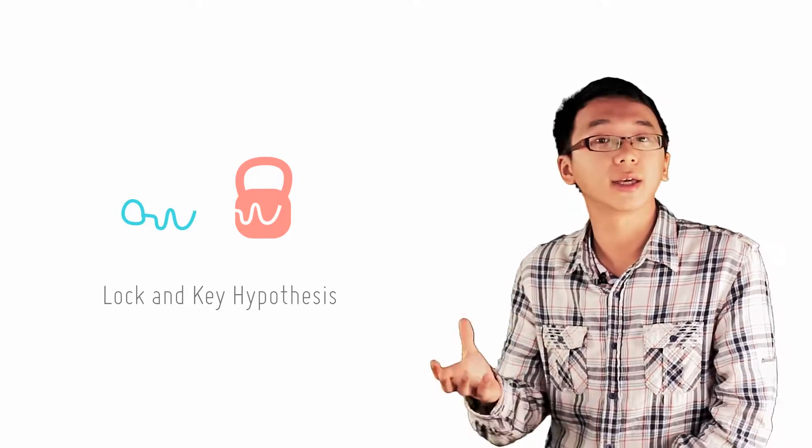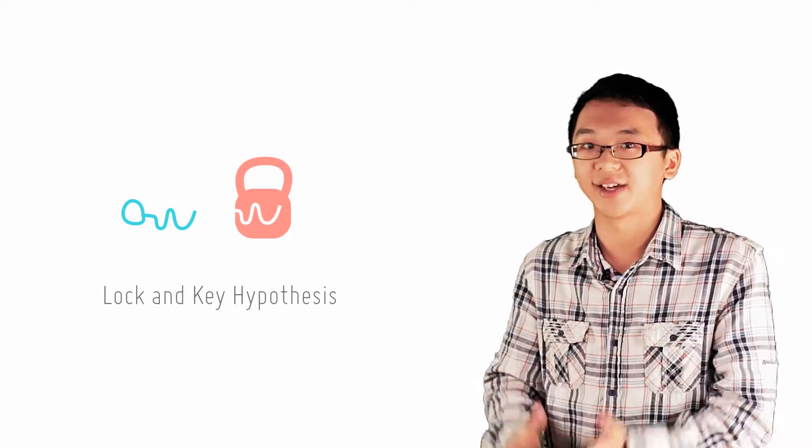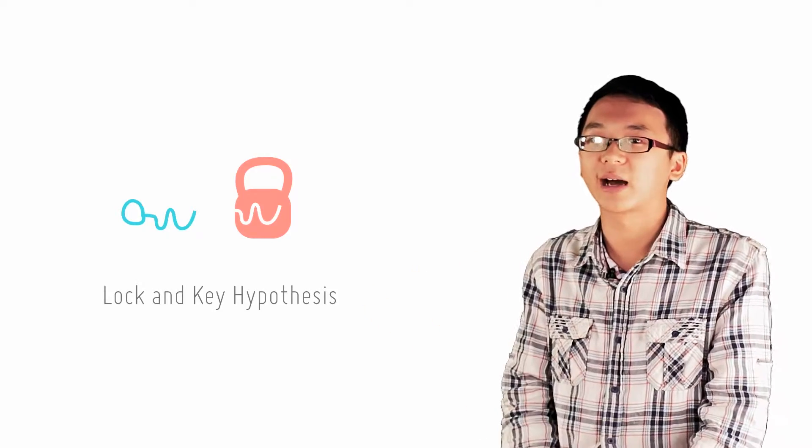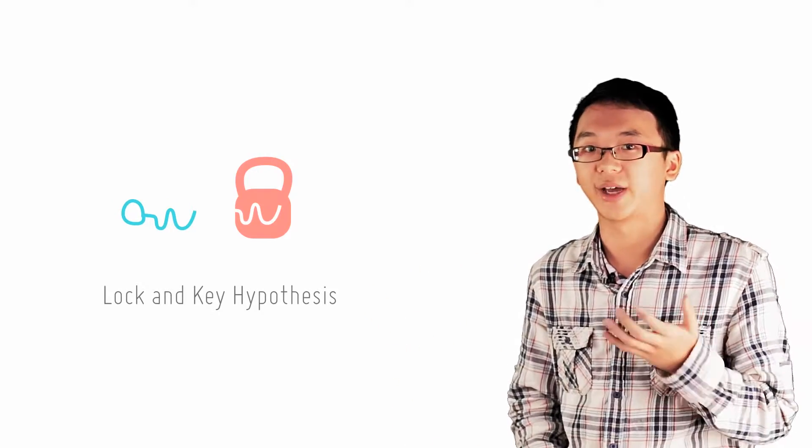Let us first look at the lock and key hypothesis, which is the first model of enzymatic action. The lock and key idea comes from treating the enzyme as a lock and the substrate as a key.